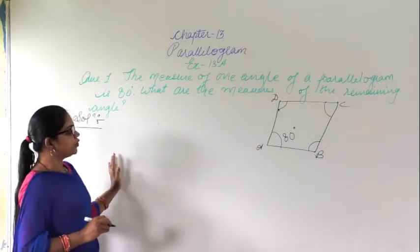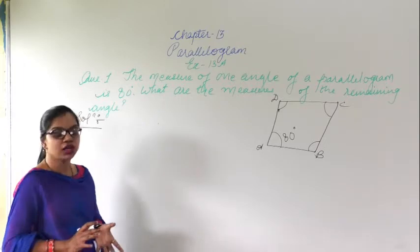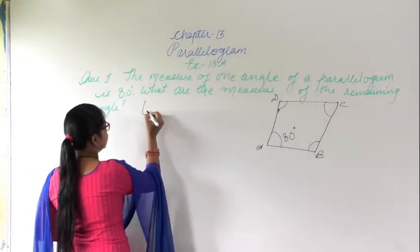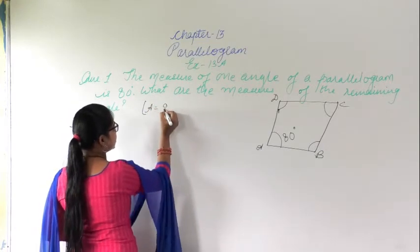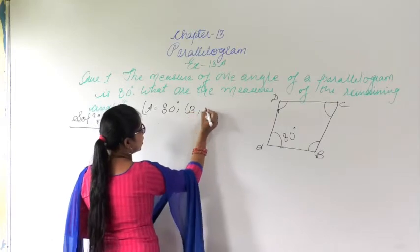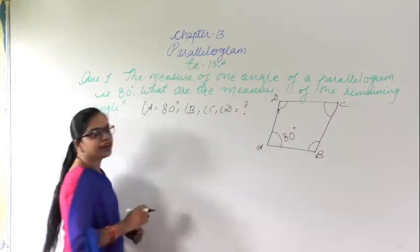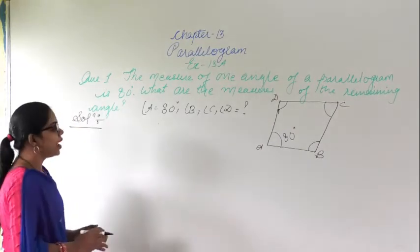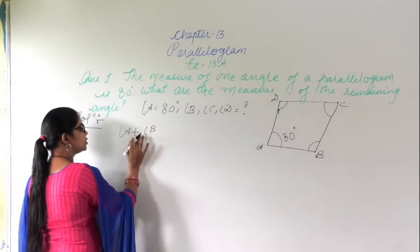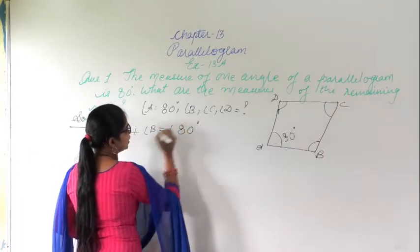So first, what is given? Only one angle is given and we have to find all the different angles. Angle A is given as 80 degrees. We have to find angle B, angle C, and angle D. So in a parallelogram, angle A plus angle B is equal to 180 degrees.